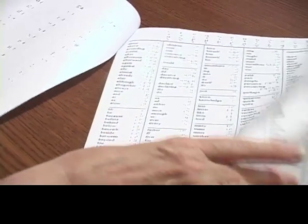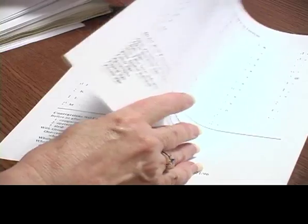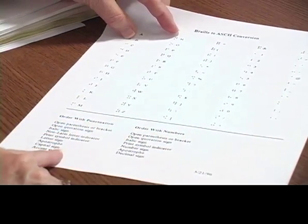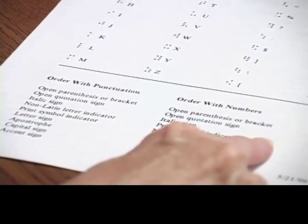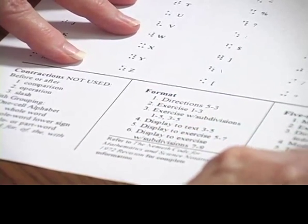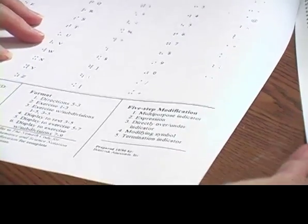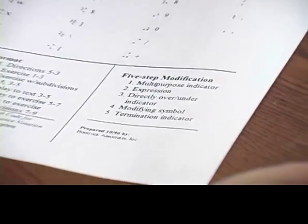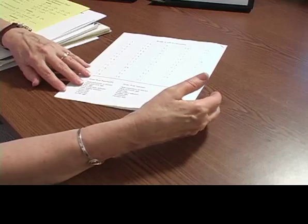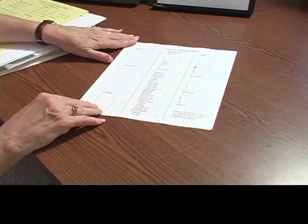There is more to this — it also gives you Braille to ASCII conversion and some literary Braille, and then a Braille to ASCII version again. The only difference between the two Braille-to-ASCII conversions is that one talks about order with punctuation and order with numbers. And then there are contractions not used, formatting, and the five-step modification. Gloria said I was allowed to copy this only if I copied it exactly as it is, so you receive the whole thing.